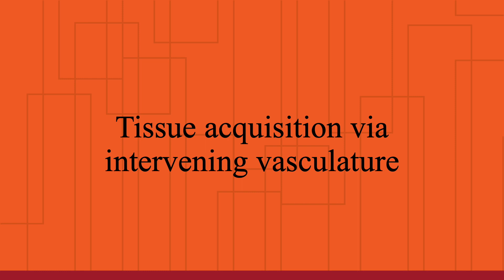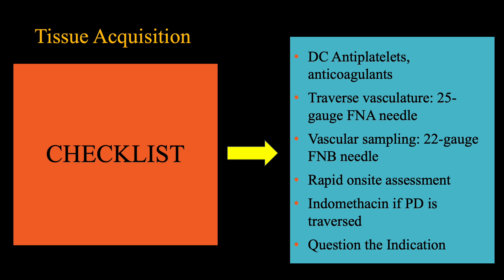In this section, we will outline how to perform tissue acquisition via normal intervening vasculature, a scenario occasionally encountered in clinical practice. When sampling a lesion where the intervening vasculature is normal, it is essential to exclude the use of antiplatelet agents other than aspirin and anticoagulants.